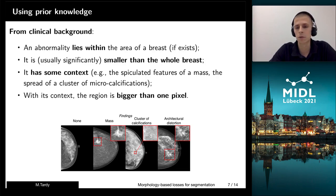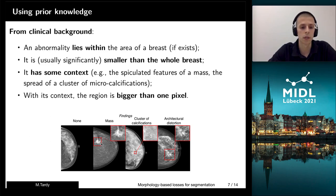Sometimes it may occupy more than half the breast, but these cases are rare. So each finding has some context — there might be some speculated features, a spread of the finding, and all types of features related to this abnormality.